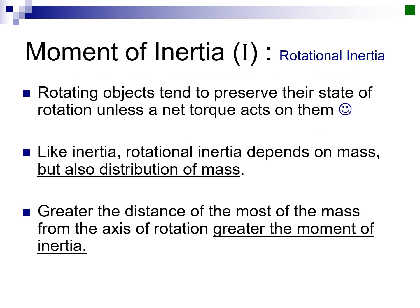Here is another analogy to linear motion: moment of inertia, or rotational inertia. Rotating objects tend to preserve their state of rotation unless a net torque acts on them. Sounds just like Newton's first law, isn't it? This is Newton's first law for rotation. Like inertia, rotational inertia depends on mass, but also distribution of mass about an axis of rotation. The greater the distance of most of the mass from the axis of rotation, the greater the moment of inertia.